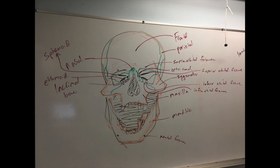We have your cheekbone, which forms a nice little bridge or arch that goes away from the skull. That's your zygomatic bone. It meets the maxilla bone about halfway across your cheek — right about in the middle of your cheek is where the maxilla comes in contact with the zygomatic, right about at that little green line.